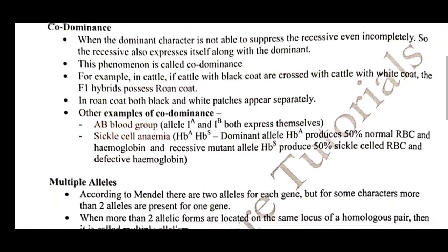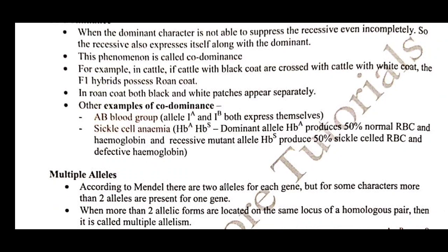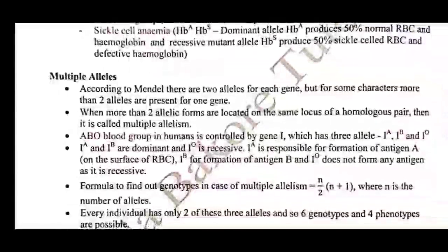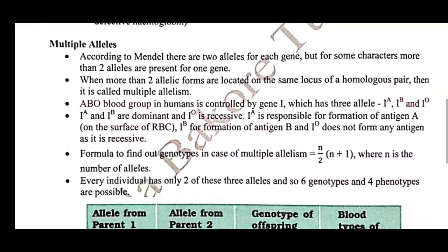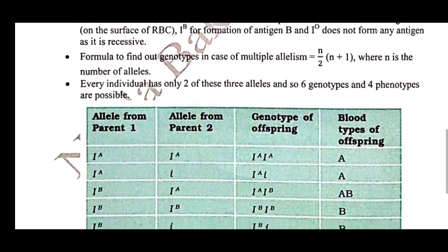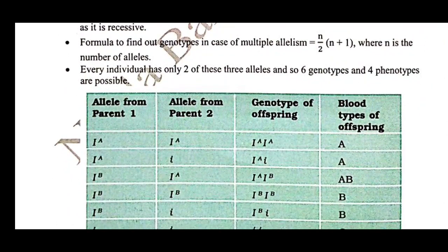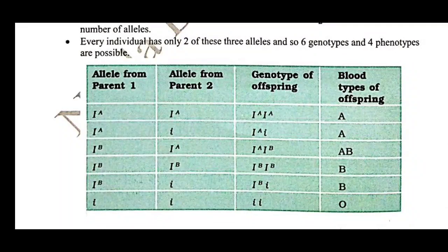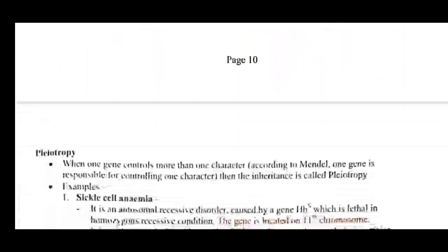After that we have Codominance, with examples of ABO blood groups and sickle cell anemia — these constitute a good portion of questions in NEET examinations. After that we have the Multiple Allele System, where the ABO blood group in humans is a famous example. Ma'am has discussed it clearly in her video lectures, and here the genotypes and blood types of offspring are given. Page number 10 is considered very important.